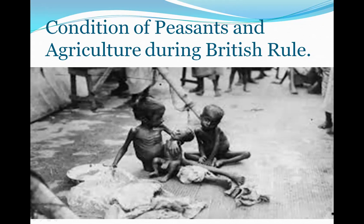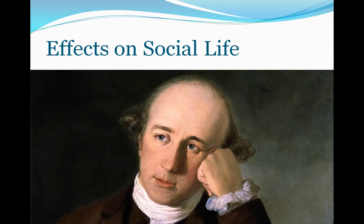Governor General Lord Cornwallis enforced the Permanent Settlement Act in order to collect revenue. As per this Act, the government fixed the revenue on an annual basis. The zamindars were given the permanent right of land and revenue collection, creating a class of landlords loyal to the company. This act ensured the income of the company. The peasants who worked hard in the hot sun to cultivate the land and grow crops were being exploited, and agricultural laborers got nothing in return.